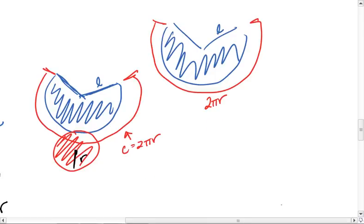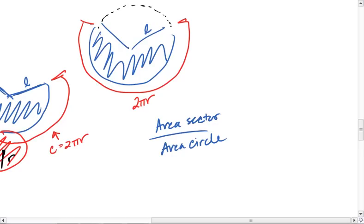We can set up a proportion. We know the area of the circle sector to the area of the entire circle, which is a circle if we were to continue our arc, must be equal to the arc length of the circle sector to the circumference of the entire circle.